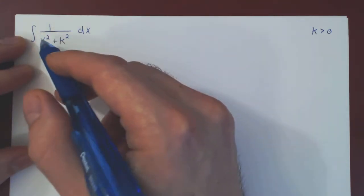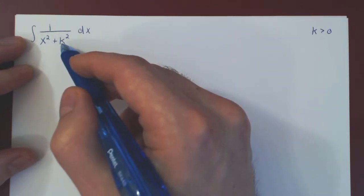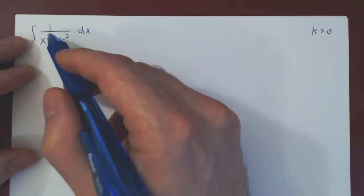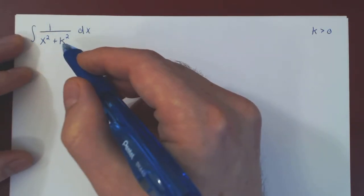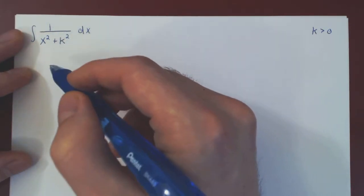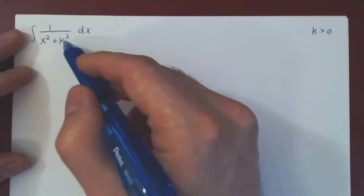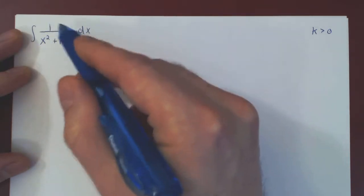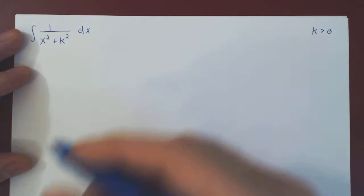So the idea is, well, this is almost the integral of 1 over x squared plus 1. If this were 1, then it would be simply the arctangent of x, and it would be done. The idea is, how can we get rid of this k squared factor? Well, if there would be a k squared factor in the first term, we could factor it out, and then we'd have the arctangent of x. So the idea is to make a simple u substitution.